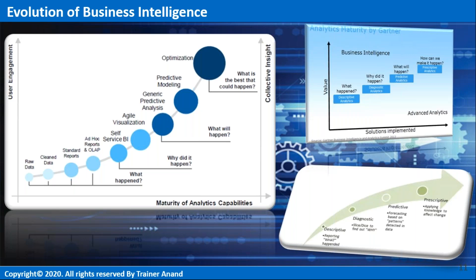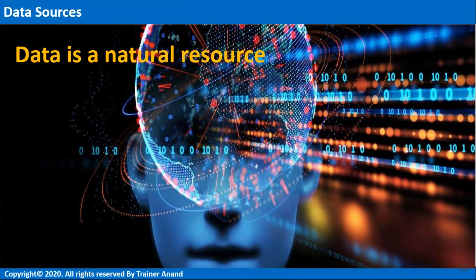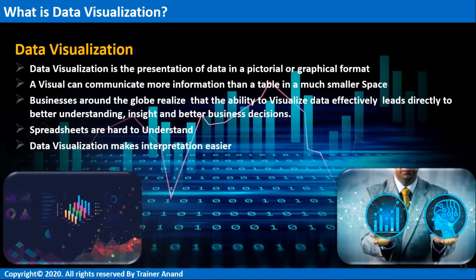Applying our knowledge to bring the expected effect — I want my business to run without disturbing anything else. Every month $100, $120, $150 — business is growing. Now I want to suddenly grow to $200. How? I have to plan strategies and apply my knowledge. That is optimization — what is the best that could happen — called prescriptive analytics. So the four types of analytics are: descriptive analytics (what happened), diagnostic analytics (why did it happen), predictive analytics (what will happen), and prescriptive analytics (how can I make it happen).